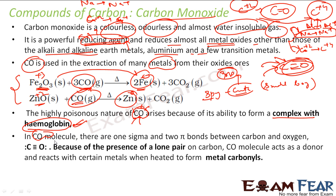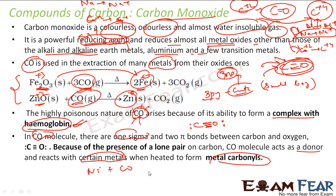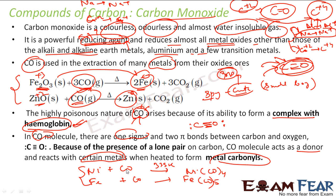Carbon monoxide has one sigma and two pi bonds. It also has lone pairs on both carbon and oxygen. With these lone pairs, it acts as a donor and reacts with certain metals to form metal carbonyls. For example, nickel reacts with CO at 335 K to give nickel tetracarbonyl, Ni(CO)₄. Iron also reacts with CO to give iron pentacarbonyl, Fe(CO)₅.